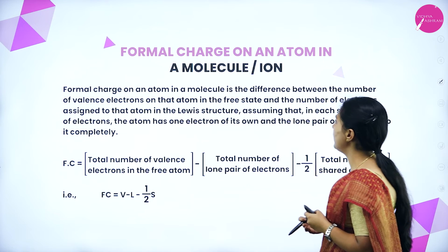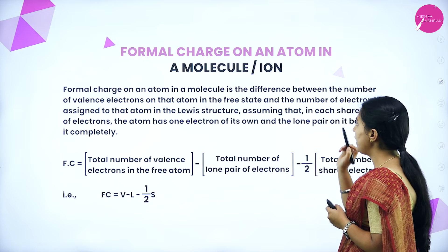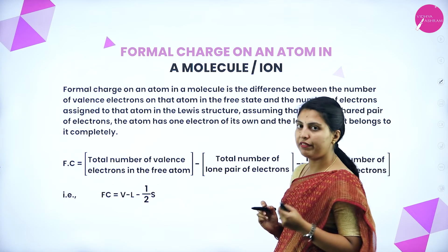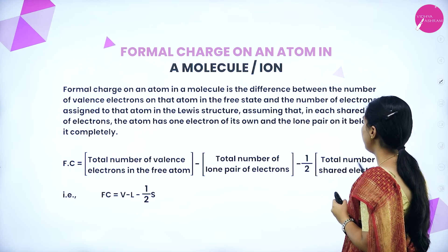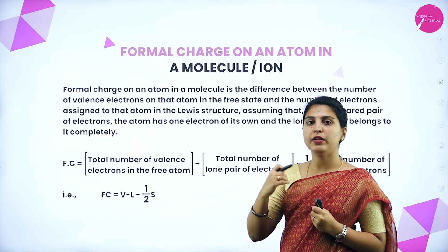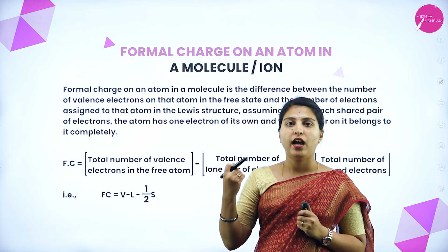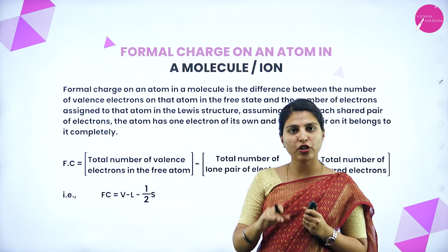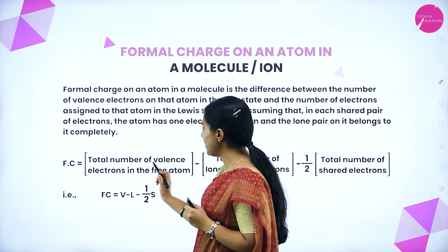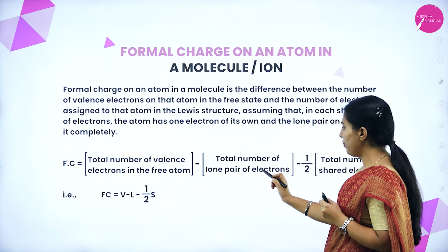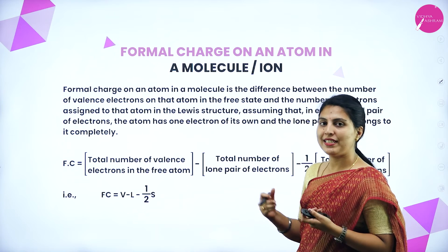Formal charge on an atom in a molecule is the difference between the number of valence electrons on the atom in a free state and the number of electrons assigned to that atom in a Lewis structure, assuming that in each shared pair, the atom has one electron of its own and all lone pairs belong to it. Formula: Formal charge = (total valence electrons) − (total lone pair electrons) − ½ × (total shared electrons).